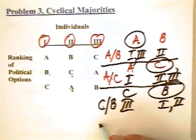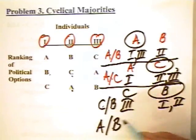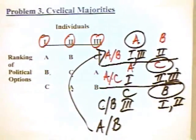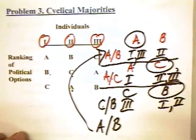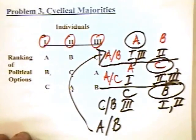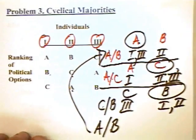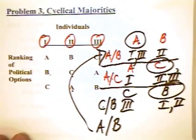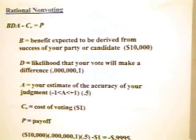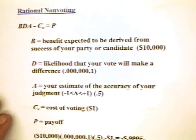We can go back and pit A against B again, and we're back to the start — we can continue the process. This is why we call it a cyclical majority, because the voting process can go round and round. The lesson here is that you can have some pretty peculiar outcomes in the political process.